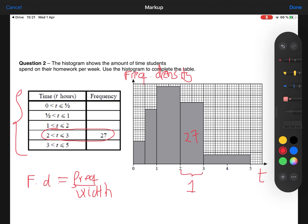Apologies if you can hear my child being slaughtered in the background. I can assure you that no child was harmed during the recording of this video. So the frequency density of this bar here, the two to three bar, is going to be the frequency which is 27 divided by the width which is one.